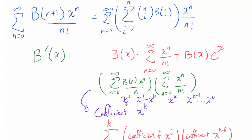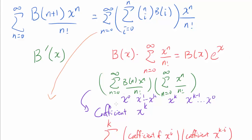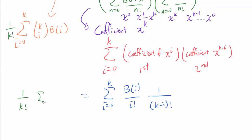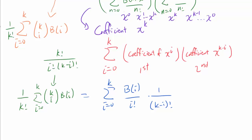We want to prove that this equals the coefficient of x to the k in the original expression for every k. For the original expression, the coefficient of x to the k is 1 over k factorial times the summation from i equals 0 to k of k-choose-i times b(i). This is easy to verify: k-choose-i equals k factorial over (i factorial times (k minus i) factorial), and once the k factorial cancels out, we have precisely the Cauchy product expression we derived. So we have shown that the right-hand side is b(x) times e to the x.